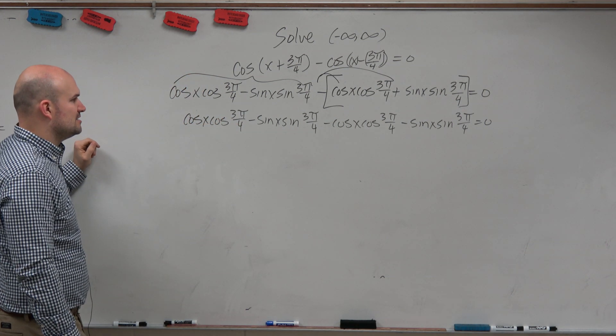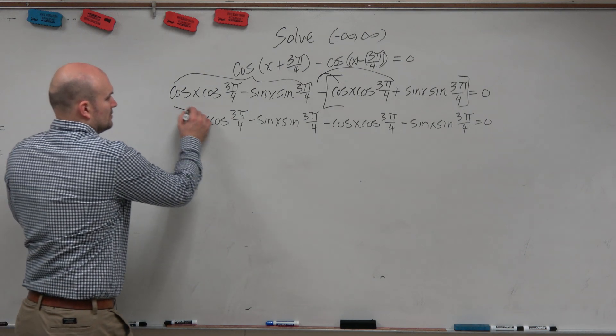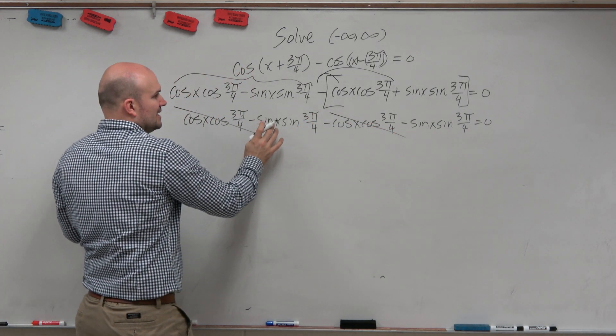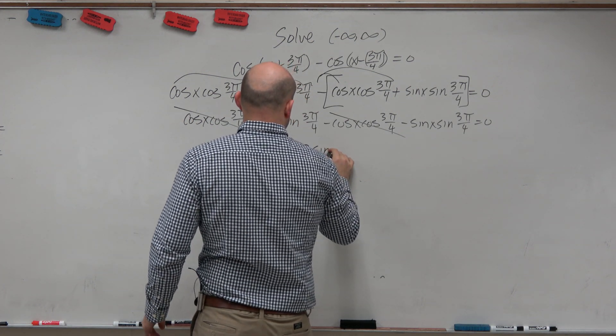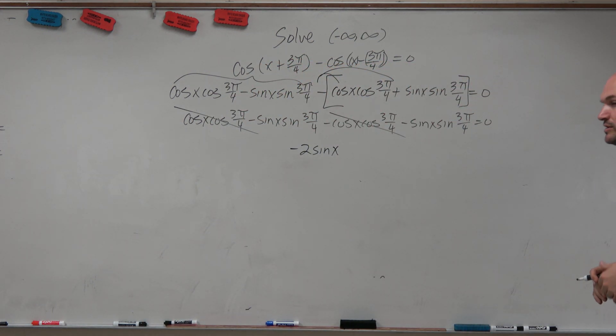All right, do we have any common terms or any terms that divide, go to zero? Those go to zero, and then these are the same. So x plus x is 2x, so negative sine of x, sine of 3π over 4.